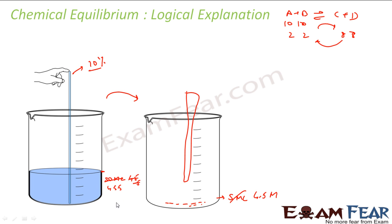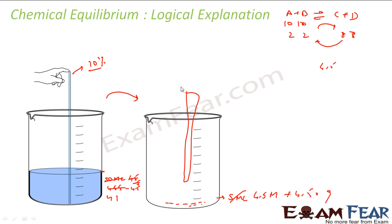Continuing the iterations: from beaker 1 (45.5 ml), 10% ≈ 4.5 ml goes to beaker 2, so beaker 1 becomes 41 ml and beaker 2 becomes 9 ml.